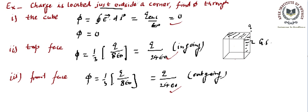So if the charge is just outside, the net flux is zero and ingoing flux equals outgoing flux. Can you try a similar calculation with the charge placed just inside? If placed just inside, you can take the cube as a Gaussian surface and the total flux through the cube will be q upon epsilon naught. Try finding the flux through the top face and front face and write your answers in the comment box. Thank you for watching.